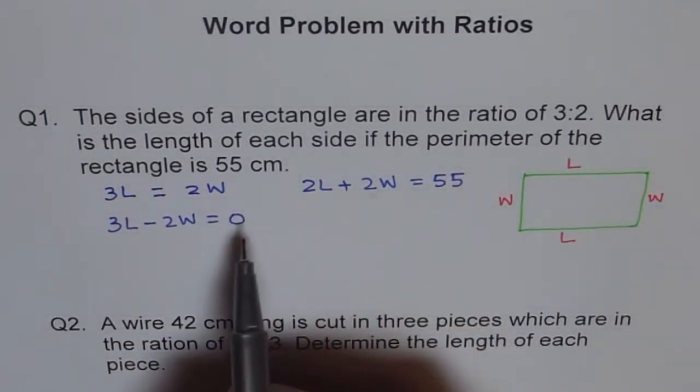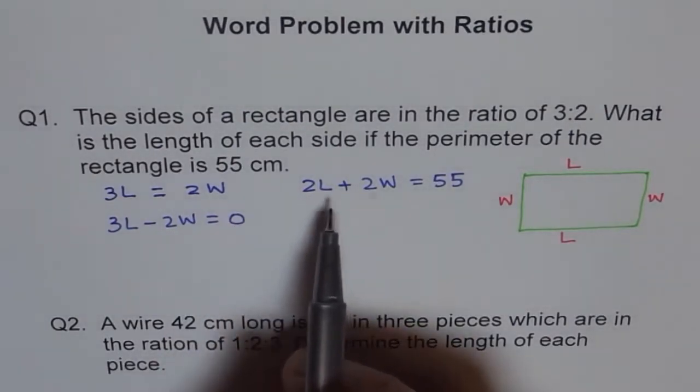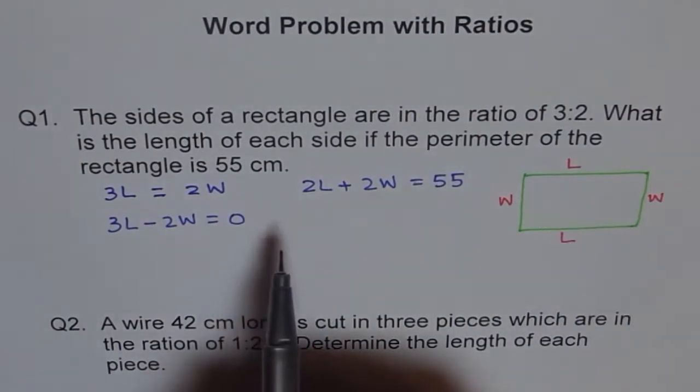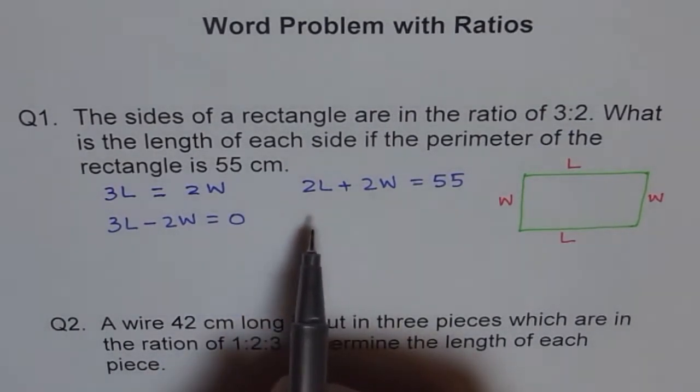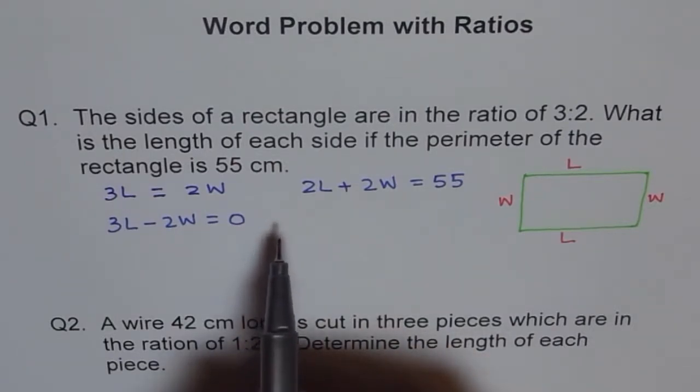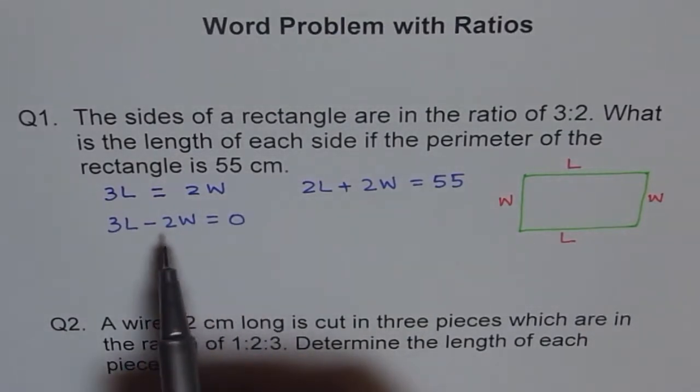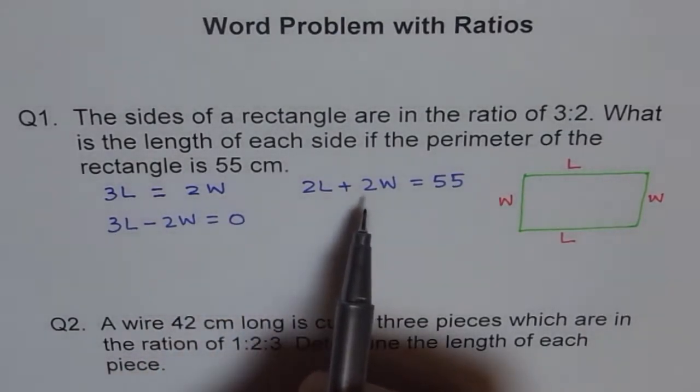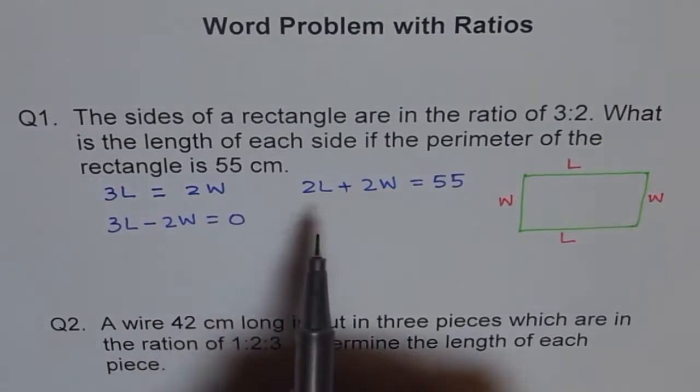In a linear system we can follow the method of substitution or elimination. Here elimination works better. Why? Because we have 2W minus here and 2W plus here, so if we add these two then we are left with only length, right? One variable equation, and then it becomes easier for us to solve for the variable.